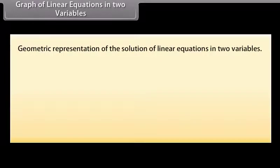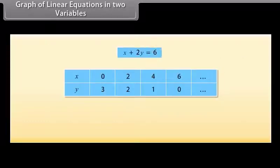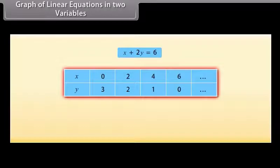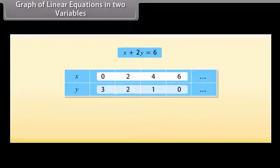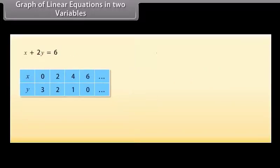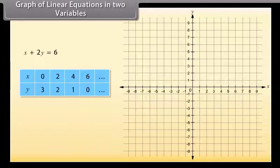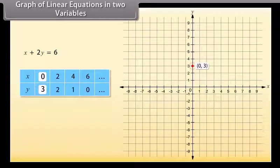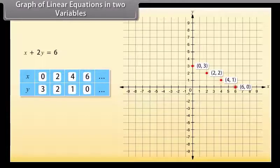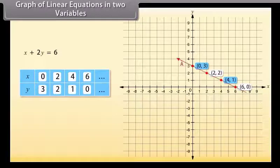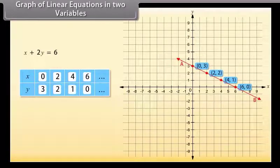Now, let us look at the geometric representation of the solution of linear equations in two variables. Look at this table — the solutions of this given equation are expressed in the form of this table. These are the values of X and these are the values of Y. Let us now plot these points on a graph paper. First take X as 0 and Y as 3 — this is the point we have obtained. Similarly, mark other points on the graph using these values. Now, join any two of these points to obtain a line. Let us join (0, 3) and (4, 1) — call this Line AB. We can see that the other two points (2, 2) and (6, 0) also lie on Line AB.